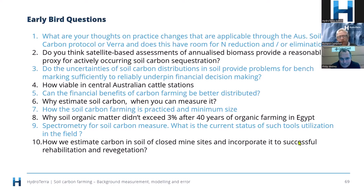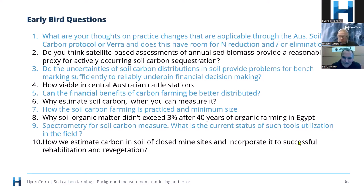Q: How viable is soil carbon farming in central Australian cattle stations? Rainfall is much lower, so sequestration can occur with a change in practice but it's very slow and the amount you can sequester is not that high. However, because the area is so great, it's certainly viable to undertake — we've got quite a few properties we're doing at the moment in central Australia. But there's no great point in doing frequent measurement; you should typically leave it to five years rather than three years.